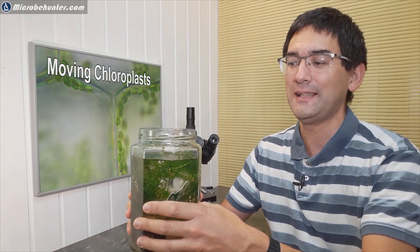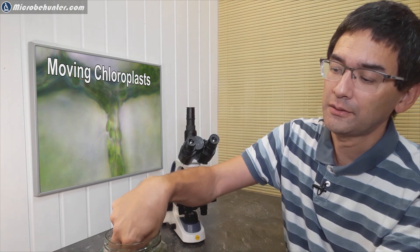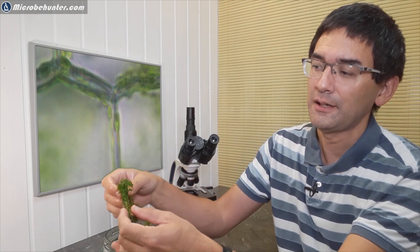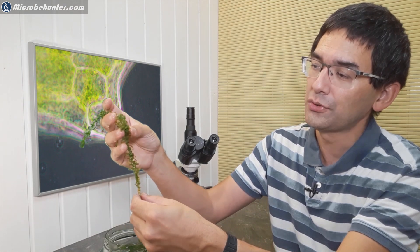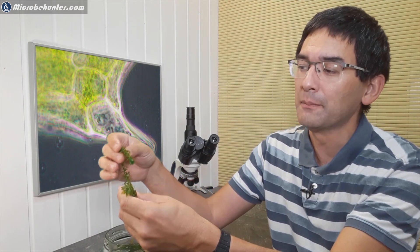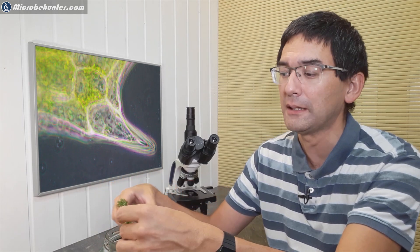So look what I've got over here. This here is Egeria densa, also known as the Brazilian Elodea. It is a water plant. Let me take out one here. It looks like this. It is long and it has roots as well. And it starts to fragment when it's big enough. So it falls apart and it grows quite rapidly.